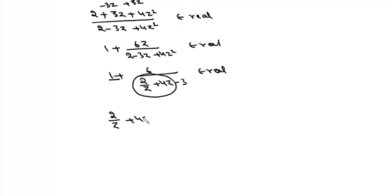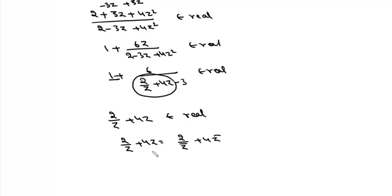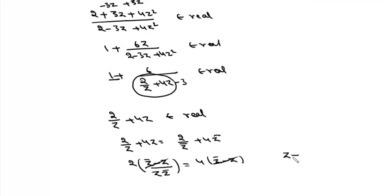So we need 2/z + 4z to be real. Applying w = w̄ again: 2/z + 4z = 2/z̄ + 4z̄. Rearranging gives 2(z̄ - z)/(z·z̄) = 4(z̄ - z). Since z ≠ z̄ we can cancel (z̄ - z), giving |z|² = 1/2, which is 0.5.